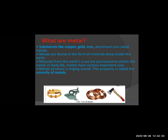In daily life we use different types of metals. Metals produce a ringing sound — this is called the property of sonority of metals. When a metal falls from your hand it produces a ringing sound. For example, in our home, if any vessel falls down, a continuous ringing sound comes. This ringing sound is called the property of sonority of metals.